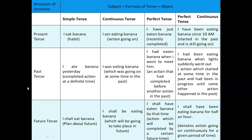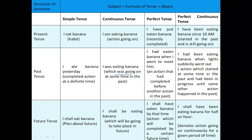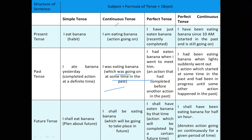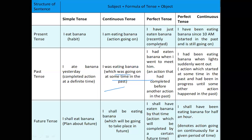Past tense. Simple past tense: 'I ate banana yesterday' — the action of eating banana was completed at a definite time in the past. Past continuous tense: 'I was eating banana' — the action of eating banana was going on at some time in the past. Past perfect tense: 'I had eaten banana when I went to meet him' — two actions are present; eating of banana had completed before meeting him.